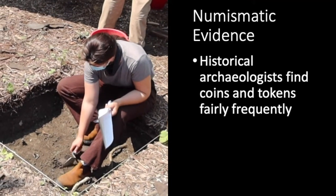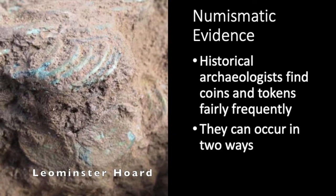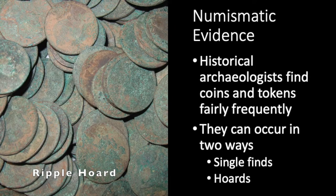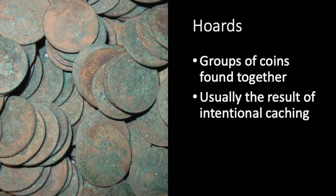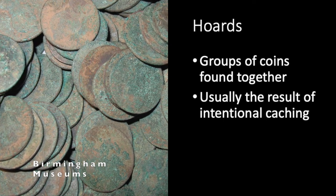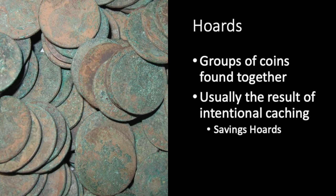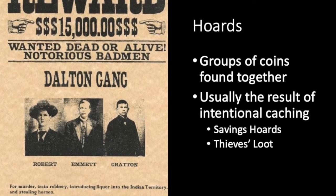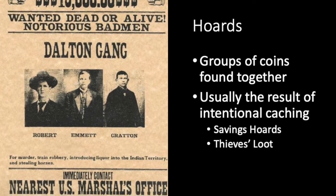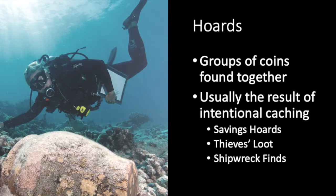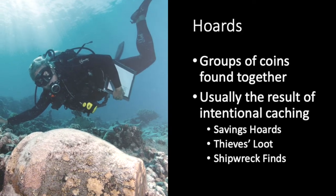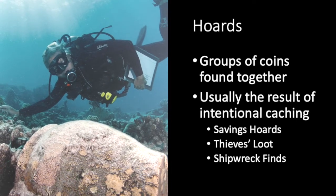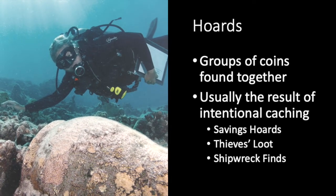Archaeological excavations on historic sites often find at least one or two coins or tokens — usually single finds, presumably accidentally dropped and never recovered. Hoards of coins or tokens are much rarer and usually result when someone intentionally buries them. Many such hoards are savings hoards, groups of coins squirreled away either because there were no banks or because people didn't trust banks. Some hoards may represent pay shipments to troops or stolen property, while shipwrecks yield some of the largest caches — most famously Spanish galleons carrying gold and silver from the New World back to Spain.